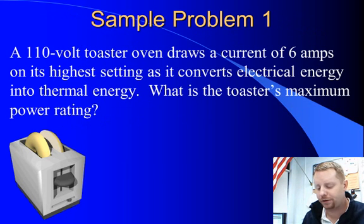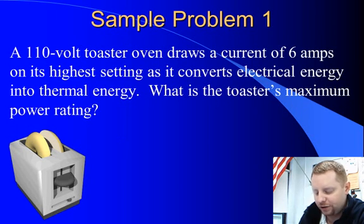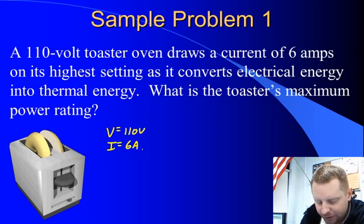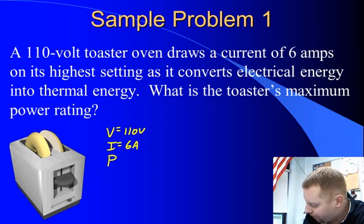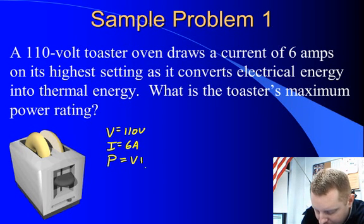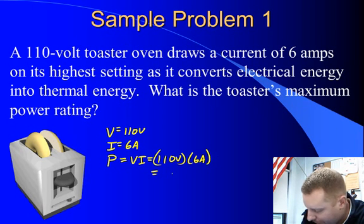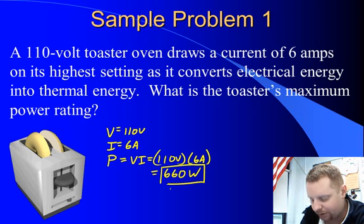A 110 volt toaster oven draws a current of 6 amps on its highest setting as it converts electrical energy into thermal energy. What is the toaster's maximum power rating? Well, its potential difference is 110 volts and its current at its highest setting is 6 amps. So we're looking for power. Since I know potential difference and current flow, I can say that power is just potential difference times current flow, 110 volts times 6 amps, which is going to be 660 watts. Very straightforward calculation.